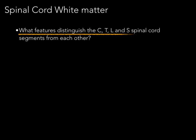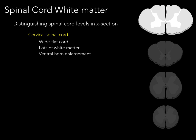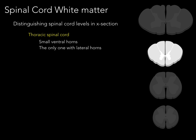What features distinguish cervical, thoracic, lumbar, and sacral spinal cord segments from each other? The cervical spinal cord is wide and flat, has lots of white matter, and has a really large ventral horn enlargement because of the lower motor neurons going to the muscles of the upper limb, especially the hand. The thoracic spinal cord has very small ventral horns because it supplies only intercostal and some body wall muscles, but it is the only level that has a lateral horn, and it still has quite a bit of white matter.